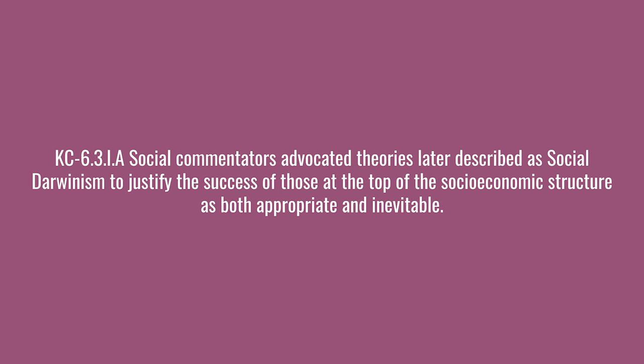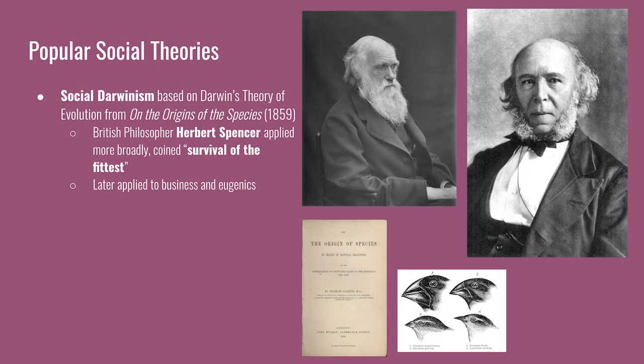Social commentators advocated theories later described as social Darwinism to justify the success of those at the top of the socioeconomic structure as both appropriate and inevitable. Social Darwinism comes from Charles Darwin's theory of evolution, introduced in On the Origin of Species, describing how species adapt to their environments. The British philosopher Herbert Spencer read Darwin and argued it could be applied to human society as well. Spencer coined the phrase 'survival of the fittest' and applied it to people of different races, using physical characteristics like cranium size and pseudosciences to classify people as fitter or lesser — placing immigrants from Southern and Eastern Europe as less capable than those from Northern and Western Europe.